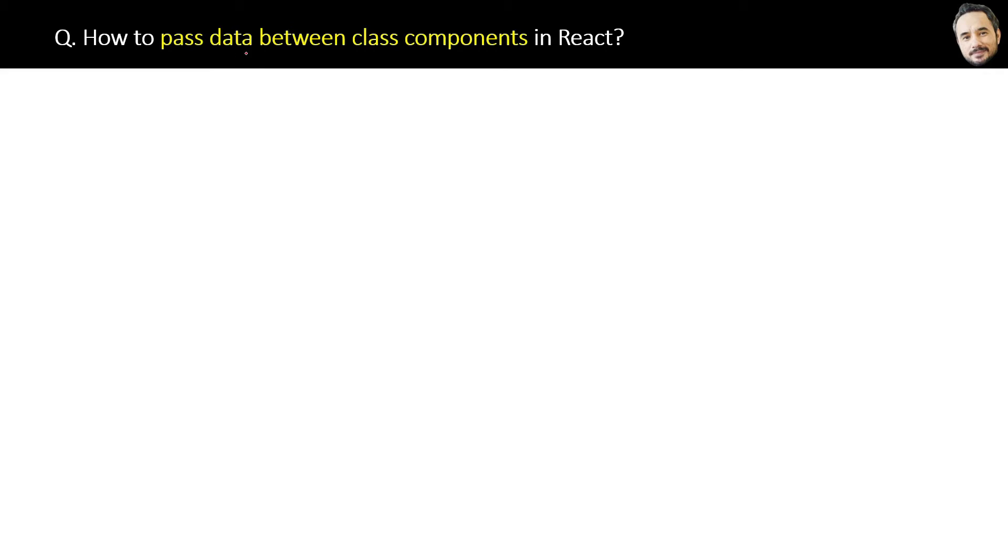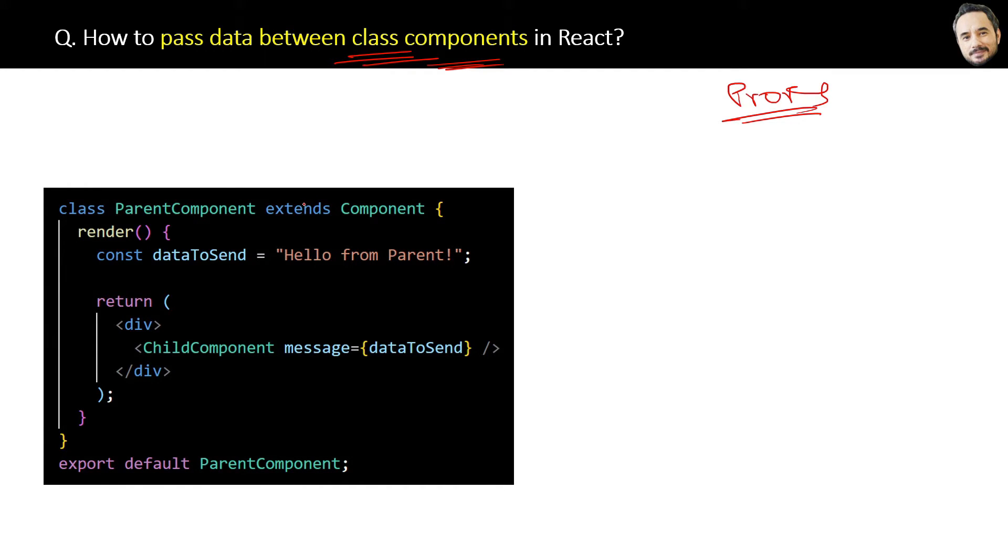How to pass data between class components in React? Like functional components, we can also pass data between class components in React using props only, but there is a slight twist here. You have the parent component inside which you have the child component.